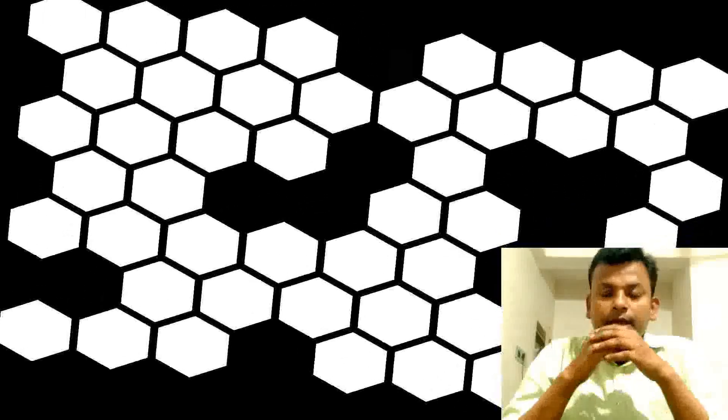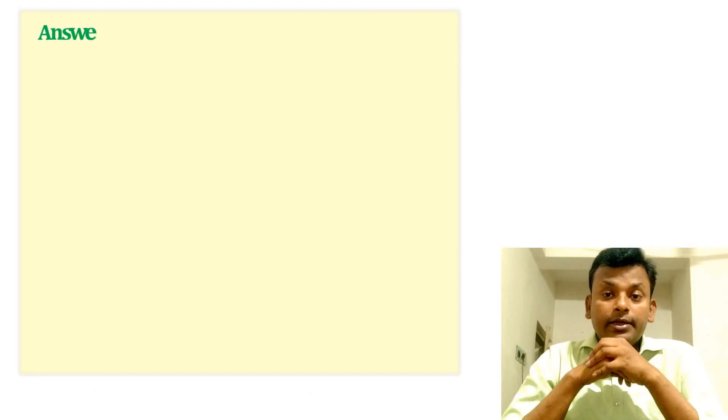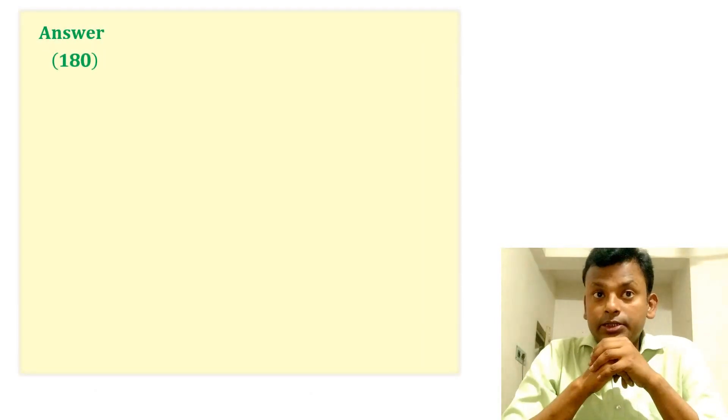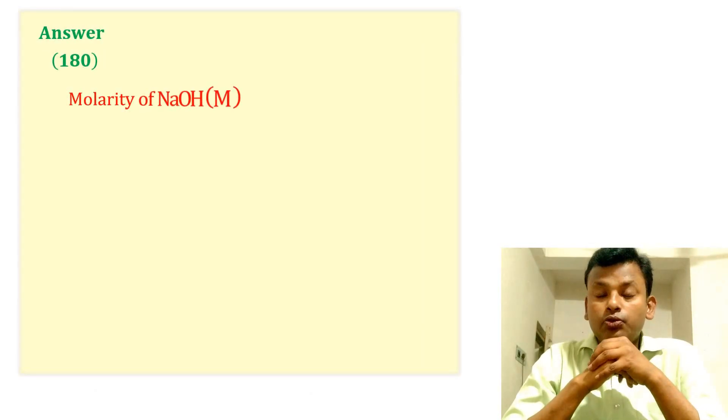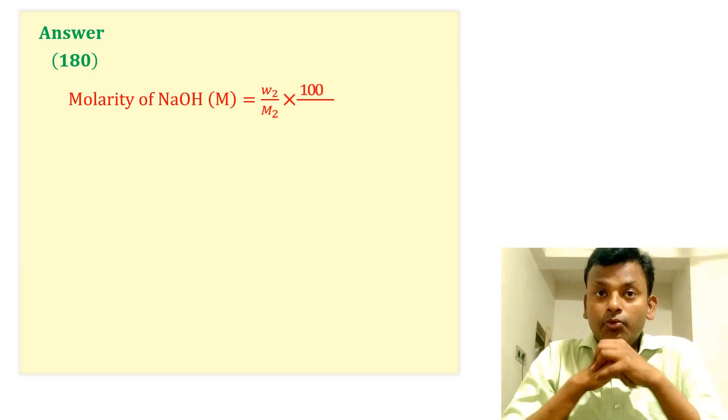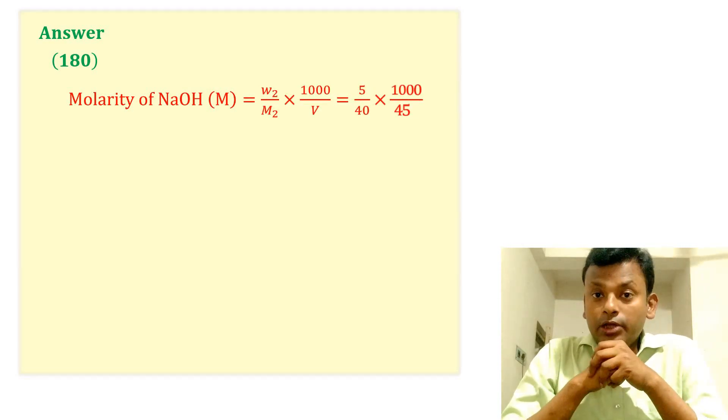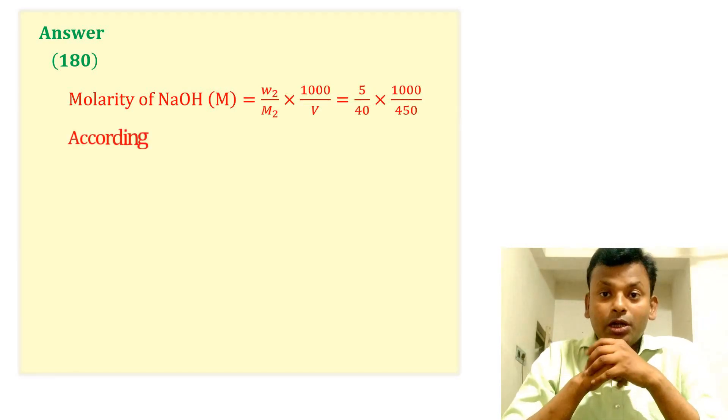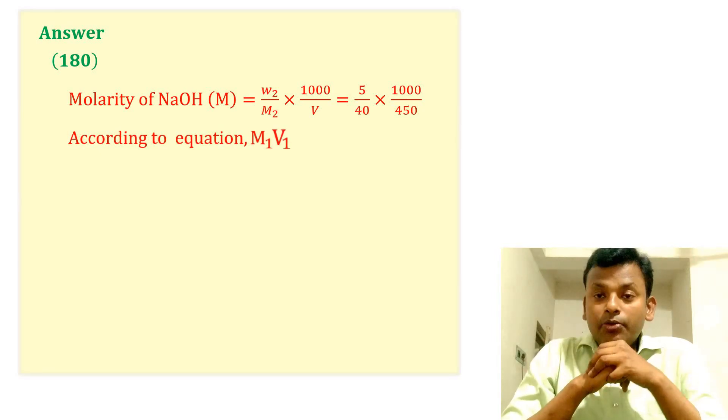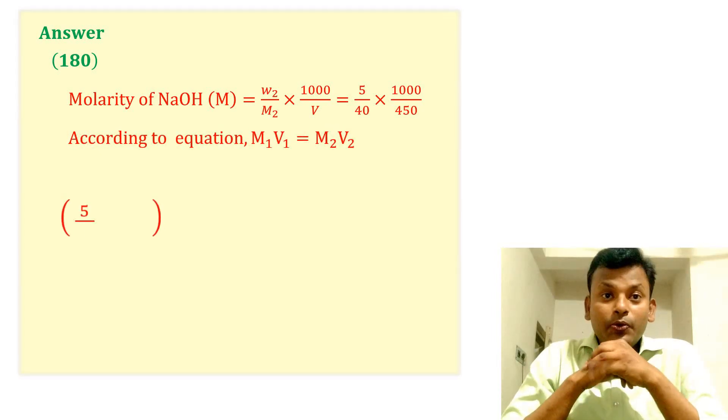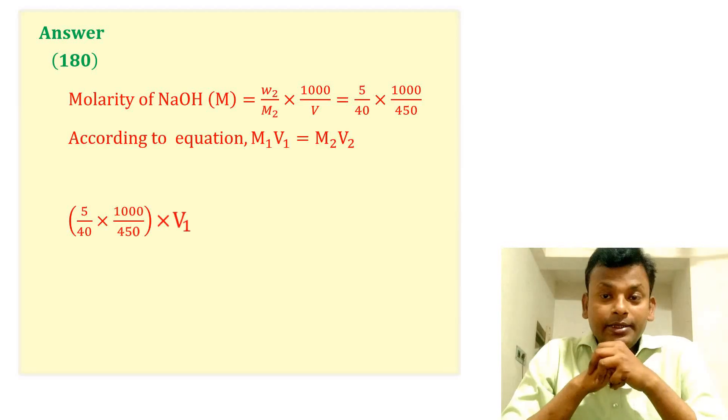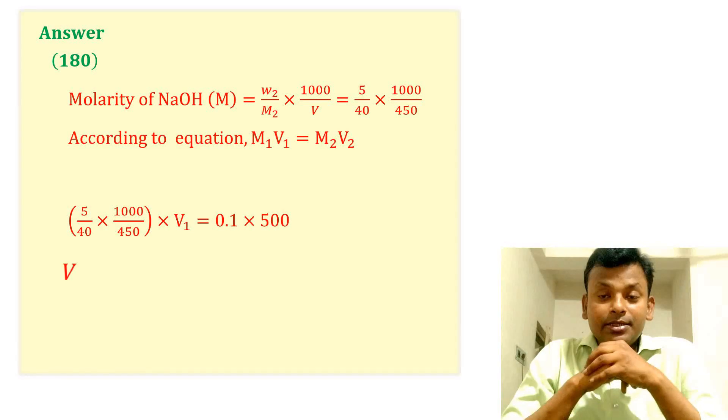Answer is 180. We know that the molarity of NaOH equals to W2 by M2 into 1000 by V. Putting the value, according to the equation M1V1 equals to M2V2, and putting all values, V1 equals to 180 ml. So answer is 180.